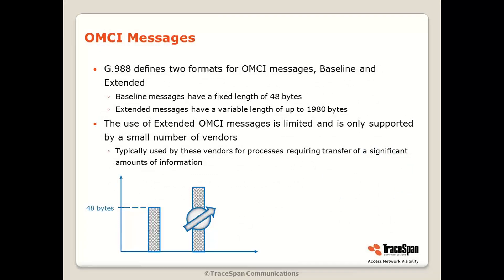The standard defines two formats for OMCI messages: baseline and extended. Baseline messages have a fixed length of 48 bytes, while extended ones have a variable length which can go up to 9080 bytes. The use of extended OMCI messages is limited and only supported by a small number of vendors, and even those vendors don't use it in every case. It's typically used for processes requiring transfer of significant amounts of information, for example MIB upload or software download to the ONU.